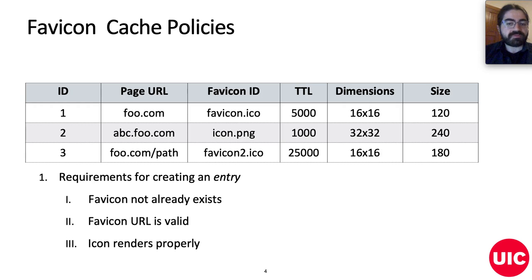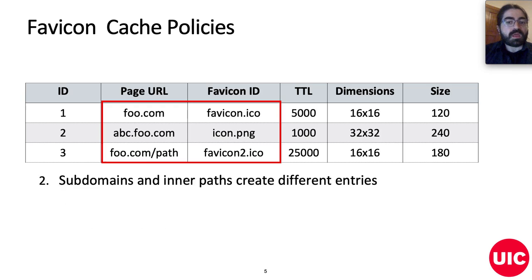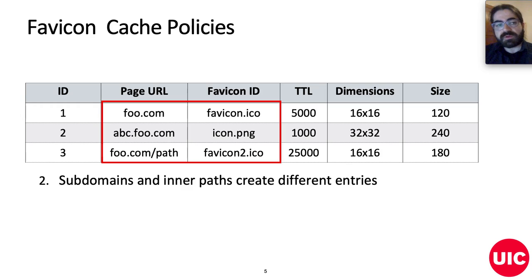If this specific favicon doesn't exist, it issues a new request and creates a new cache entry after the successful fetch and render of the icon. In any subsequent visit, the browser uses the cached favicon until it expires or if it is modified by the page. Another policy is present for customizing websites, which defines that when the browser navigates to subdomains or the page's inner paths, the cache will create separate entries if different favicons are delivered.